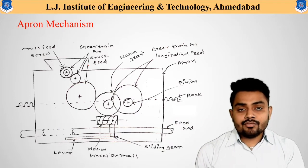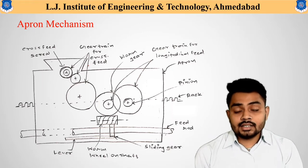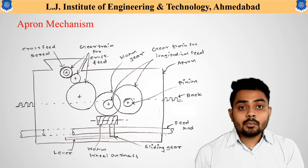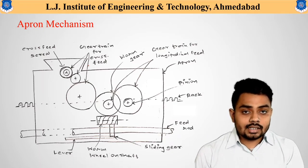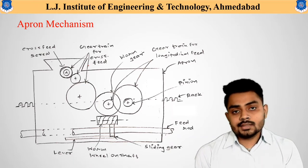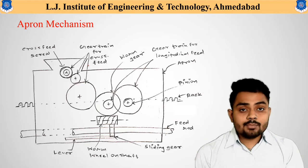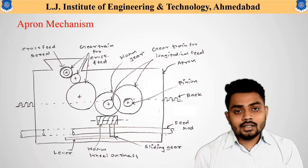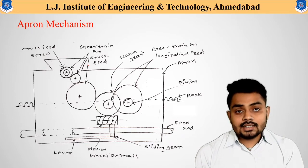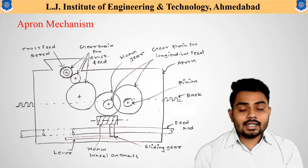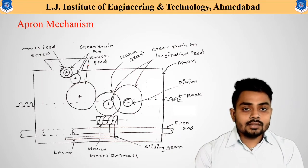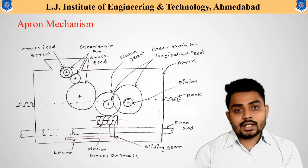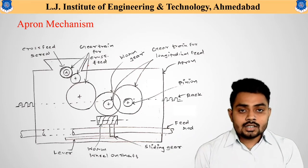There are different variations of apron mechanisms available in different lathe machines. We will look at a simple 2D figure to understand the connections inside this apron mechanism. This apron mechanism is located inside the carriage section and cannot be directly seen with the naked eye; you need to disassemble the carriage section to view it.